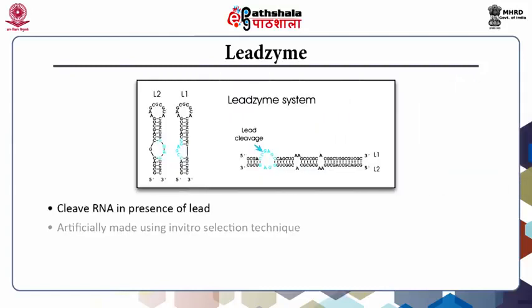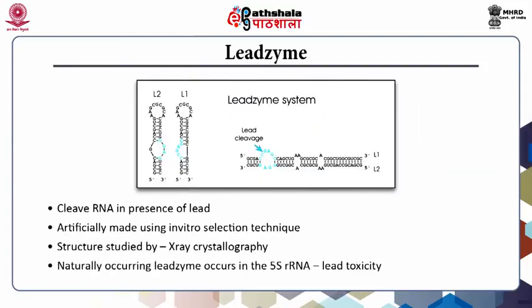Leadzyme is a small ribozyme also known as a metalloribozyme due to its obligatory requirement for lead for catalysis. It comprises an asymmetric internal loop with six nucleotides and a helical region on each side of the internal loop, which acts as the site for cleavage. It specifically cleaves the phosphodiester bond. Even though it was discovered in an artificial system, natural counterparts exist in 5S rRNA.